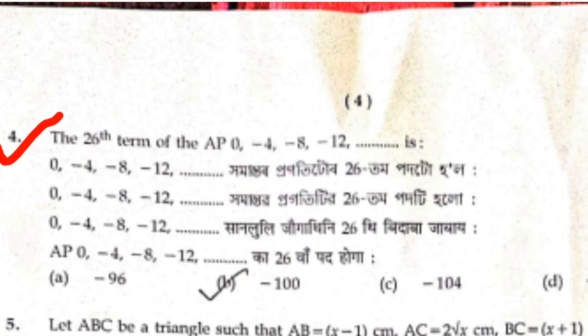The next question uses the sequence: 0, minus 4, minus 8, minus 12. The options are 0, minus 1, 0, 4. So the option is 0, minus 1, 0, 4.